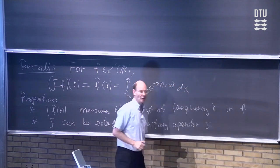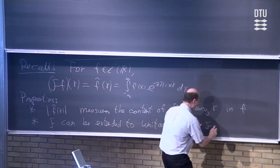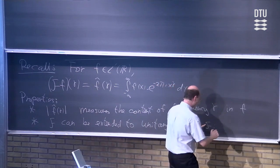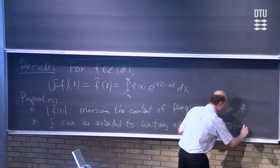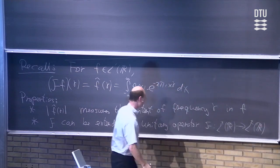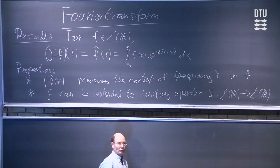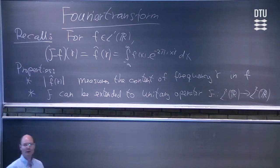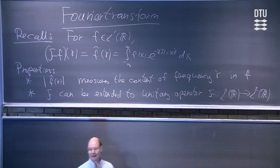We decided not to put any tilde on the extension, so we just denote the extension by F again. This is an extension to an operator from L2 of R into L2 of R. We will see a very important property of the Fourier transform today, and it is not related to all of the space L2 of R, but related to a subspace of L2 of R. So let's define that space first.